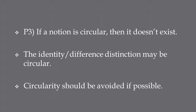On the other hand, one could try to define the notion of identity first, and then take difference to mean the negation of identity. Similarly, one could take identity as a primitive notion and take difference to mean the negation of identity. In any case, circularity is a bad thing, and we'd like to avoid it if possible. For our purposes, we'll accept Premise 3 — that circular notions don't exist.